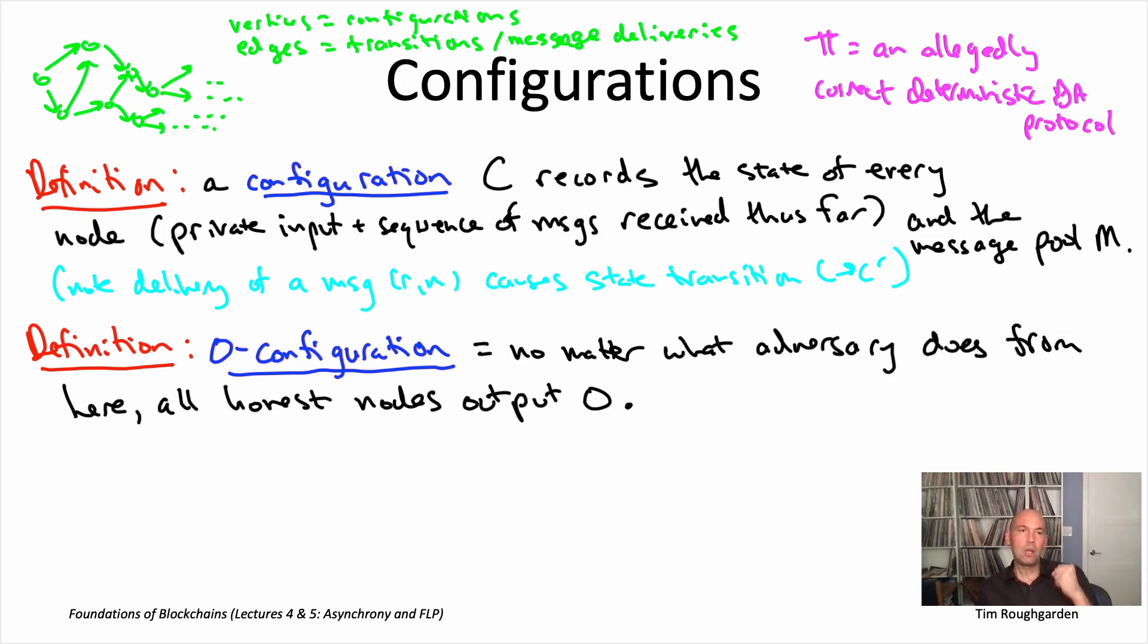In other words, at a zero configuration, the adversary - and again, by the adversary I mean both the Byzantine nodes and the message delivery - the adversary no longer has any ability to force the all ones as the output. It's stuck with the all zeros as output.